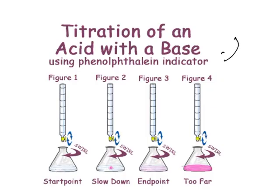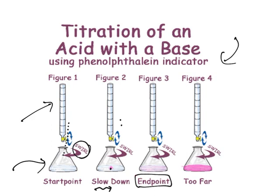This is how a titration is carried out. Initially, the titrant is taken in the burette and the analyte is taken in the conical flask. You need to add the titrant drop by drop while shaking the conical flask. The indicator gives a faint color change, so you slowly add the titrant with continuous shaking until you get the end point. If too much volume is run down, it gives a dark color, which means you have gone too far past the end point.